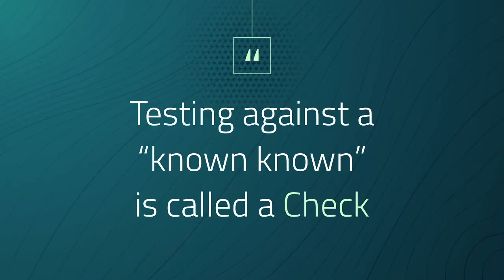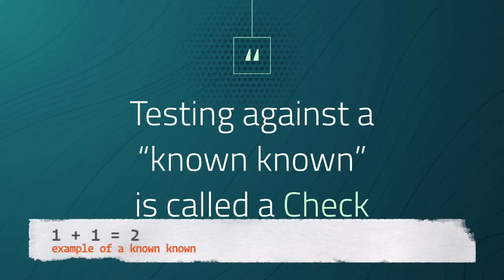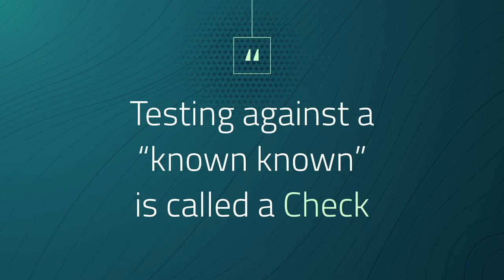Whenever you test against known knowns, they are called checks. This is one form of testing. We have a basic theory about mathematical arithmetic. For example, a known known is that 1 plus 1 equals 2. But how do we know that we were taught correctly? How do we know that the computer sees it the same way?